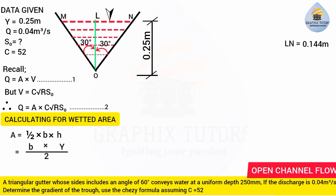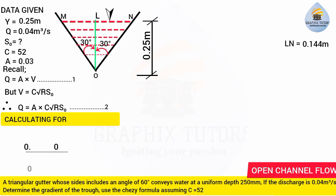The wetted area A = ½ × MN × y = ½ × 0.288 × 0.25 = 0.036 square meters.